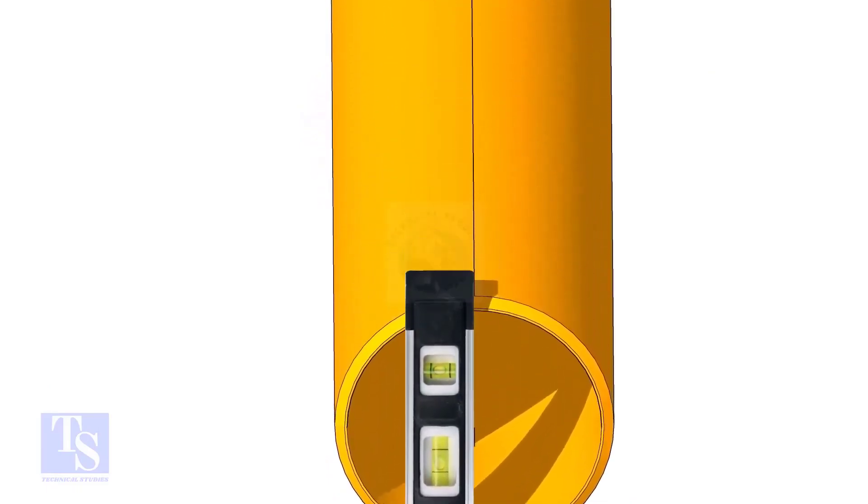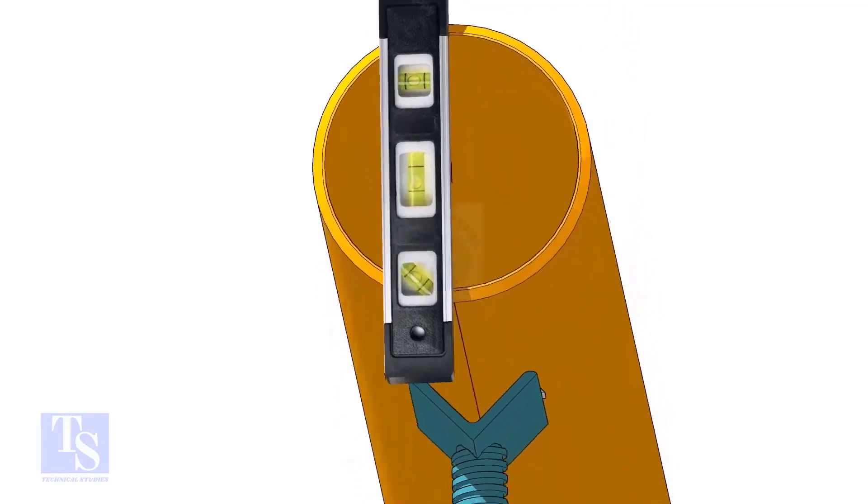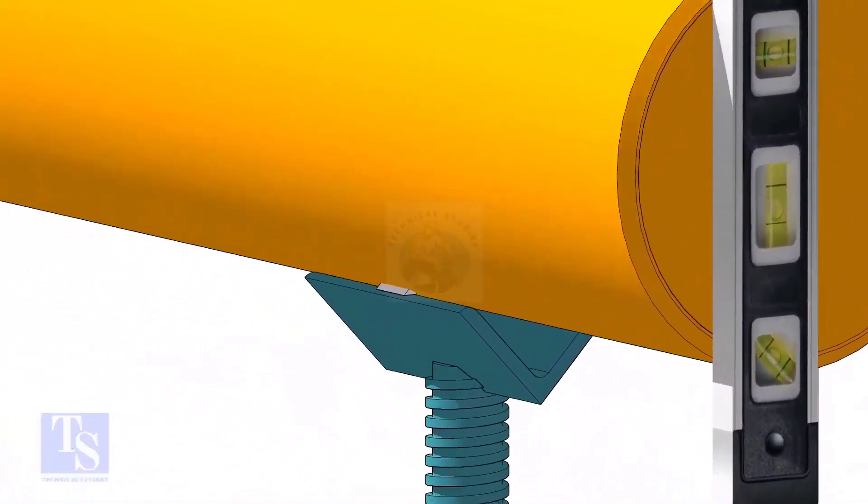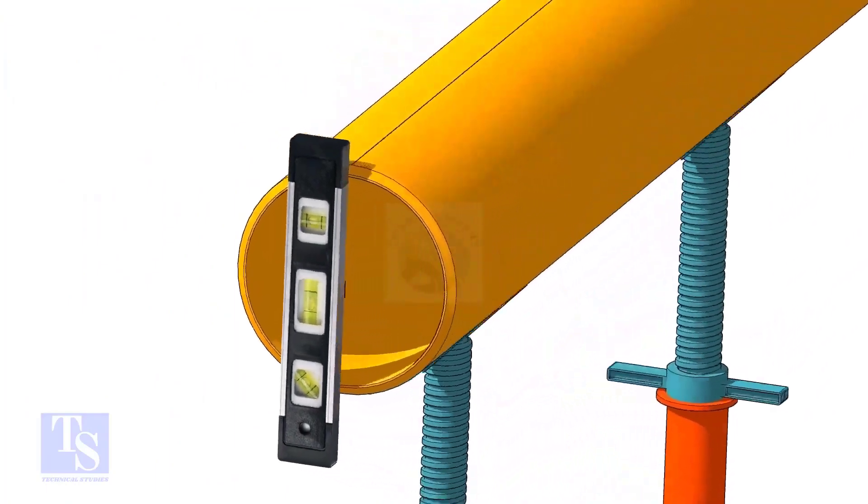Level the pipe horizontally and vertically as shown. After leveling, arrest the pipe to stop it from rotating.